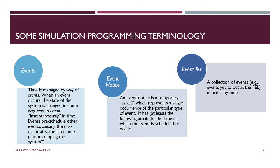The timing routine in an event-oriented simulation program takes all the event notices for events waiting to happen, puts them in the Future Events List ordered by time. When the system finishes what it's doing and asks what's next, the answer is the event notice at the front of the list — because they're in order by time. Nothing happens until that time, and then you pop it off the front of the list and do whatever it says.